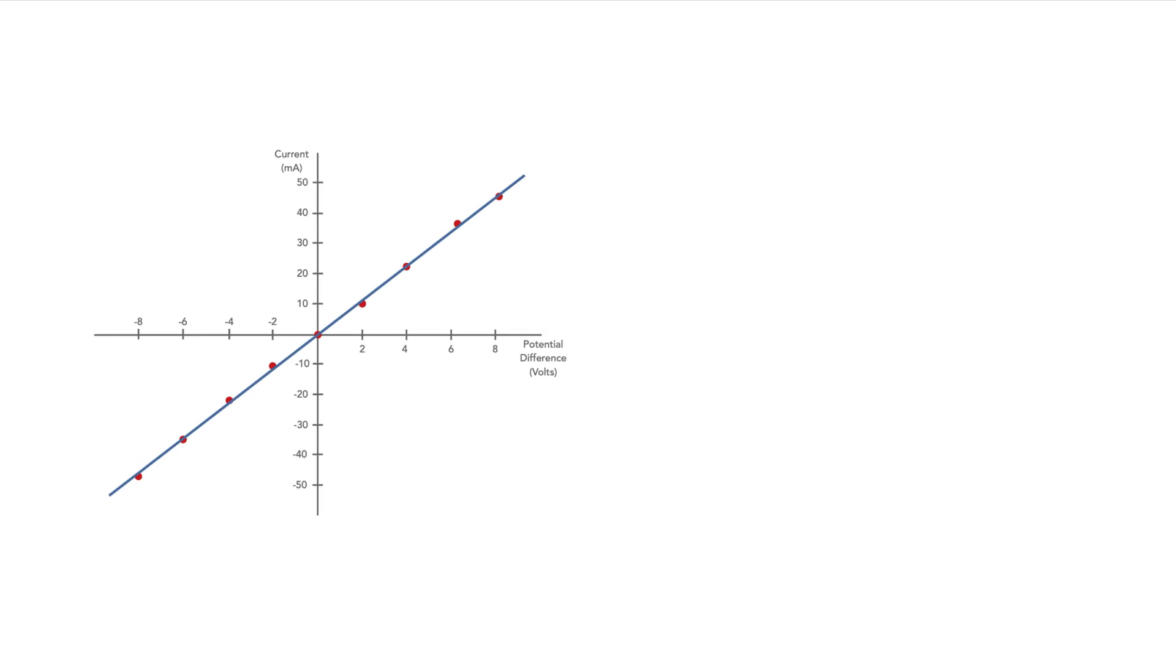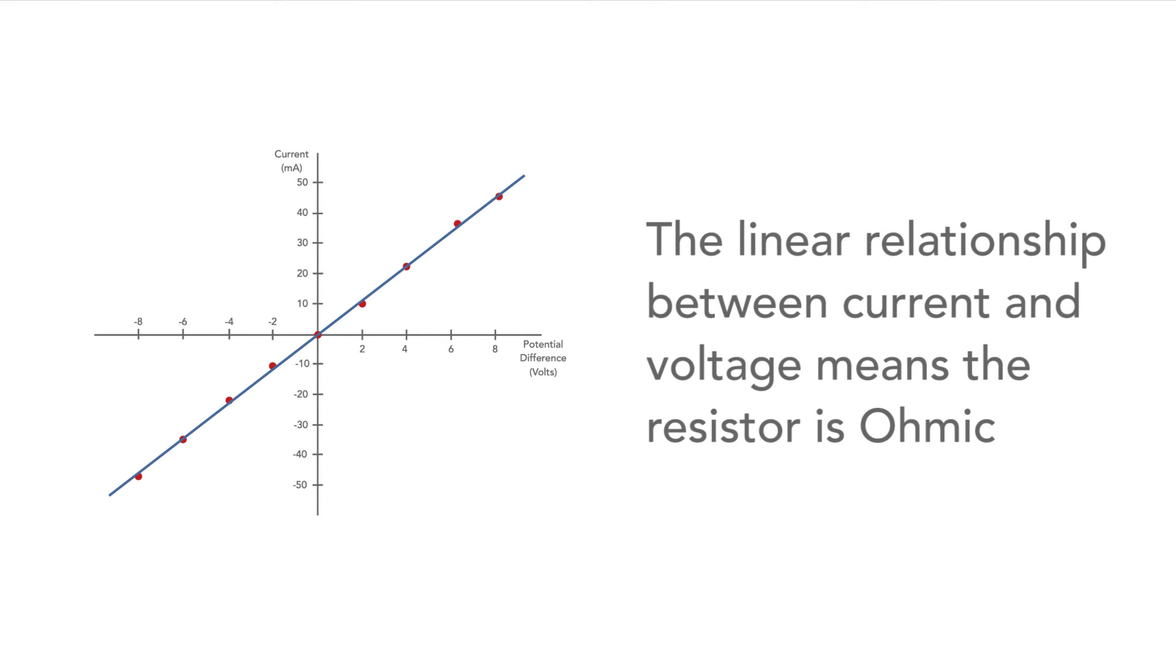Plotting the current voltage characteristic here, we see that it forms a straight line within the limits of experimental accuracy. This means that this resistor, like most other resistors, follows Ohm's law and can be called Ohmic.